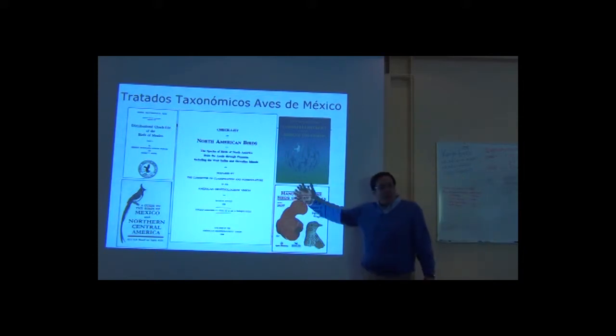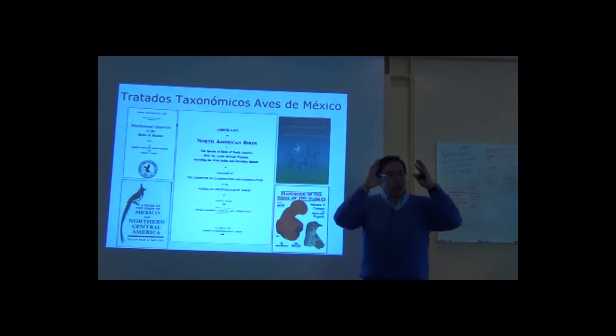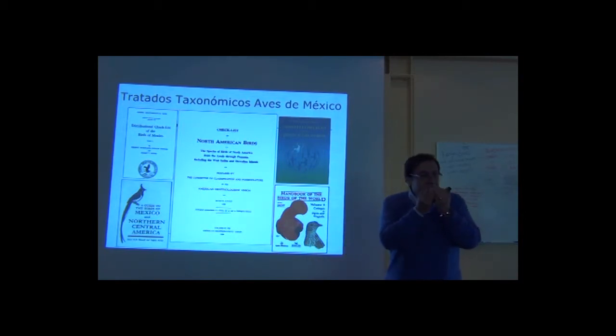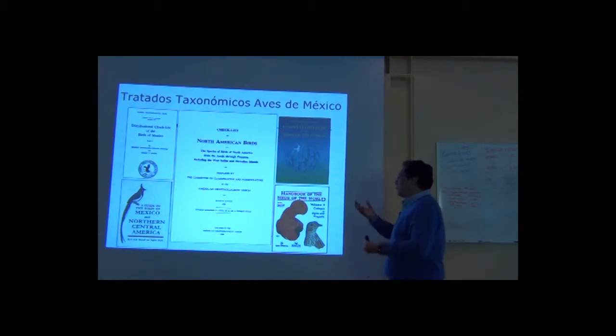Given that we have those many approaches and those many concepts about what species is, and the problem, believe me, is crucial. We are working with species, I insist. How can we not know what species is? How can we not get into an agreement? How many species are of any taxon?